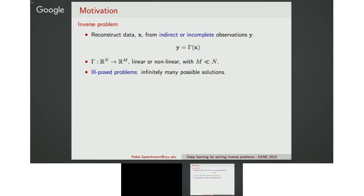To be slightly more formal, the idea is that we want to reconstruct a certain signal x from some incomplete or indirect measurements y. We have a function gamma that gives us the measurements, and in general the space in which the measurements live is of smaller dimensionality than that of the signal, or the measurements are highly corrupted. These problems are, in general, ill-posed, meaning we have infinitely many possible solutions that would match our observations.